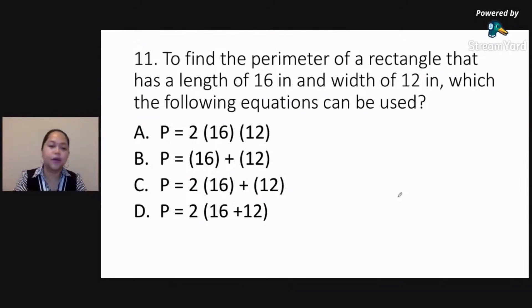Is it letter A? P equals 2 multiplied by quantity 16 multiplied by quantity 12. B: P equals quantity 16 plus quantity 12. C: P equals 2 multiplied by quantity 16 plus 12. Or D: P equals 2 multiplied by quantity 16 plus 12.